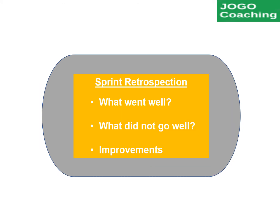The next event is the sprint retrospective. The purpose of this event is to review the process followed in the completed sprint. The team will answer three questions: what went well, what did not go well, and what can be improved for the future. Improvement actions will be practiced in the upcoming sprints. This meeting helps the team focus on continuous improvement.